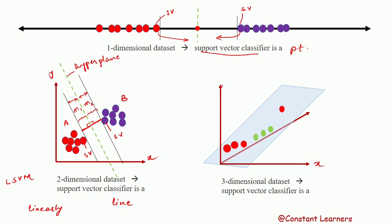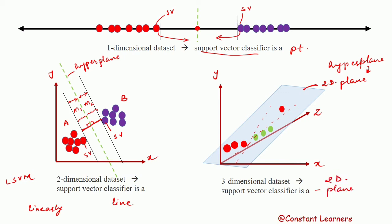In case of three-dimensional data set with x, y, and z axes, we cannot classify data using a straight line — there is no straight line that works. So we use a two-dimensional plane. Our hyperplane or support vector classifier in three-dimensional data is a two-dimensional plane. To summarize: for two-dimensional data the support vector classifier is a one-dimensional line, and for three-dimensional data it is a two-dimensional plane.